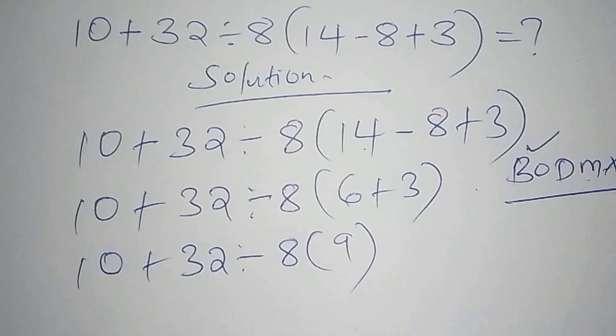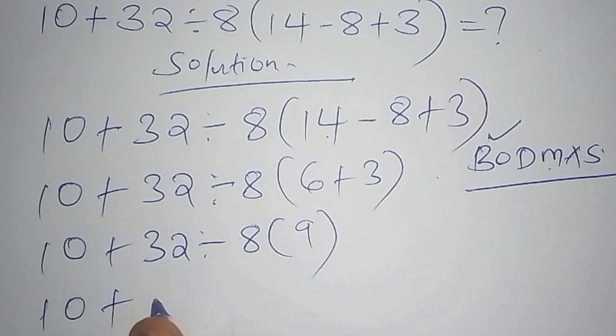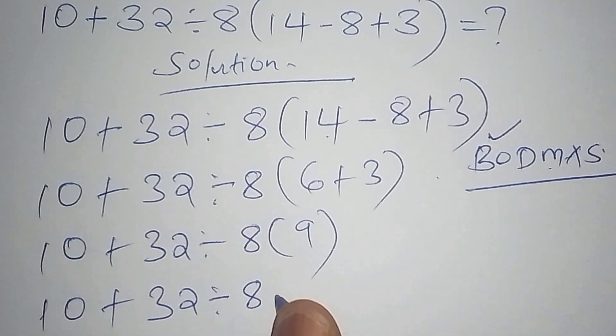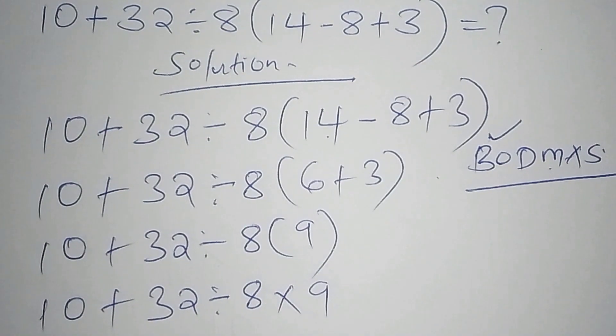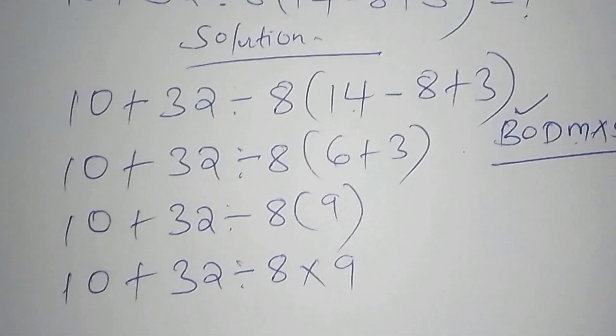Let us now omit the number inside the bracket. So how are we going to do that? So we are going to take 10 plus 32. So that 32 divide by 8. So when you want to remove the bracket, we simply multiply by 9.